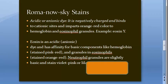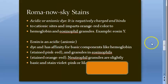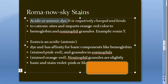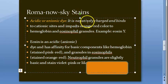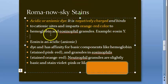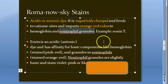Now moving on to the acidic dye component. The acidic or anionic dye is negatively charged, so it binds to cationic sites. It imparts an orange-red color to hemoglobin and to eosinophil granules.